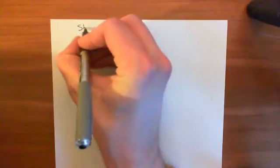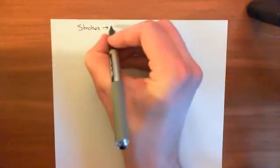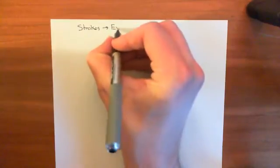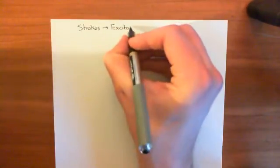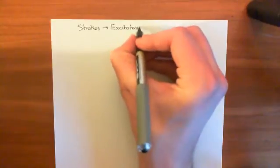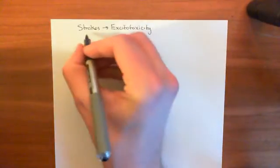Welcome to this next video in the playlist on glutamate signalling. In this video, we're going to look at strokes and how strokes can lead to excitotoxicity, and this is what leads to neuronal death in strokes. Excitotoxicity is what actually happens to cause neurons to die.